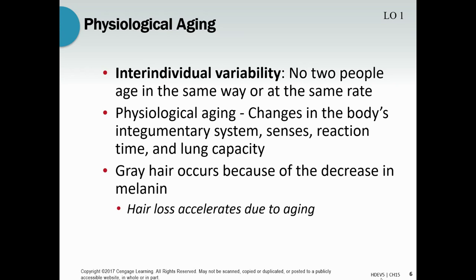Obviously there are going to be a lot of changes to the body, especially to what we call the integumentary system, which basically includes the senses, reaction time, lung capacity, nails, and skin — and we start seeing a downturn here. For example, hair starts to gray. If you are a man, you might start to lose a lot of hair.